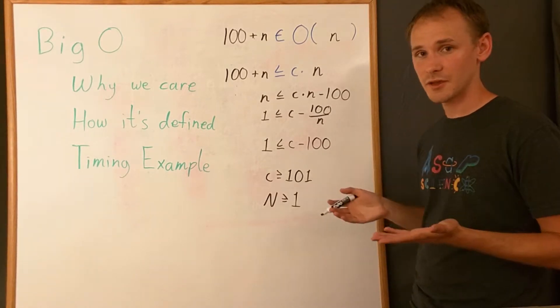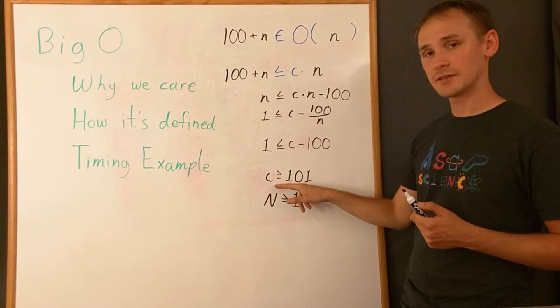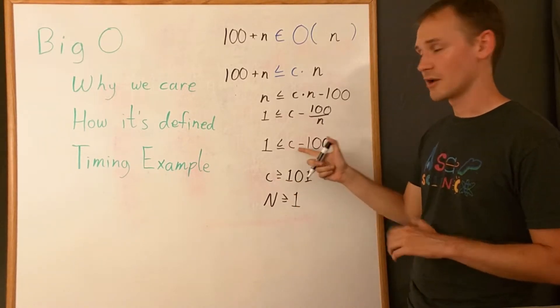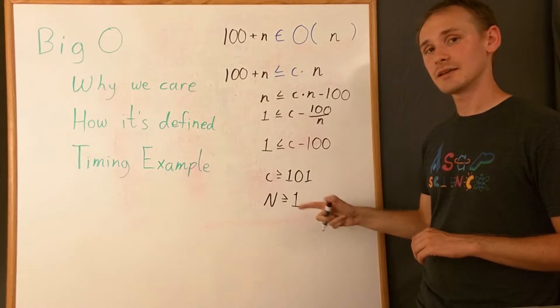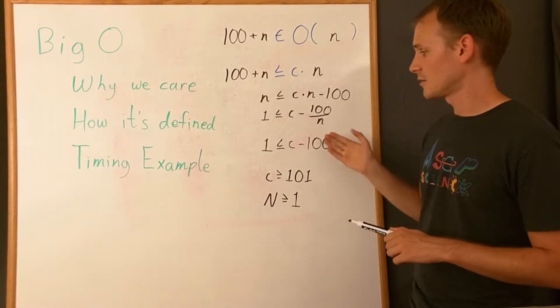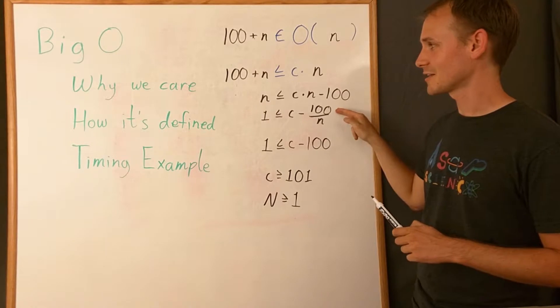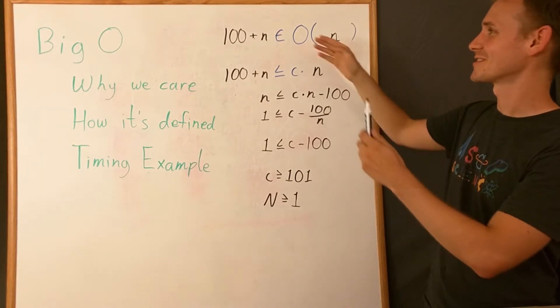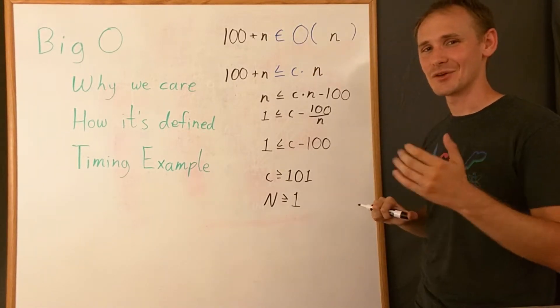So by choosing a value of n and c, we can prove that as long as c is greater than or equal to 101, and big N is greater than or equal to 1, then this equation is always satisfied, which means this is satisfied, which means this is satisfied, which means that T(n) is O(n).